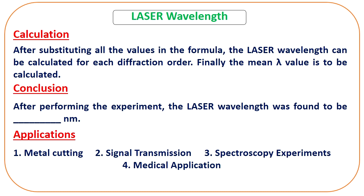The laser light we are using is a semiconductor diode laser, and the wavelength should be in the range of 620 to 700 nanometers — roughly around 650 nanometers. Some applications of laser include metal cutting, signal transmission, spectroscopy experiments, and medical applications. With that, we complete our laser experiment. Thank you.